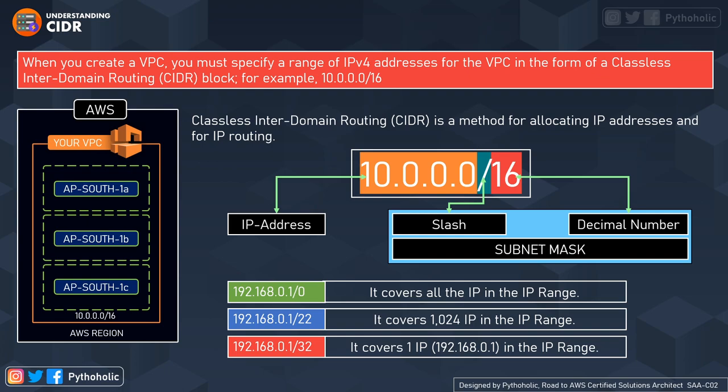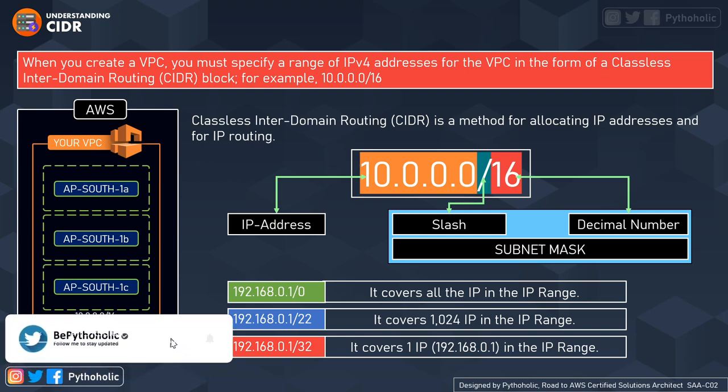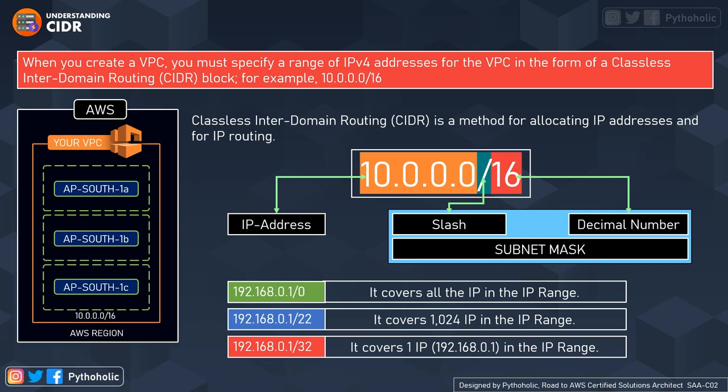Subnets should remain within the availability zones because this eliminates a single point of failure — that is what we call high availability. If you create one subnet spanning across two or three availability zones, there is no point in making it isolated, and that's also not possible. The goal is that subnets should be available within isolated availability zones so we can eradicate a single point of failure.